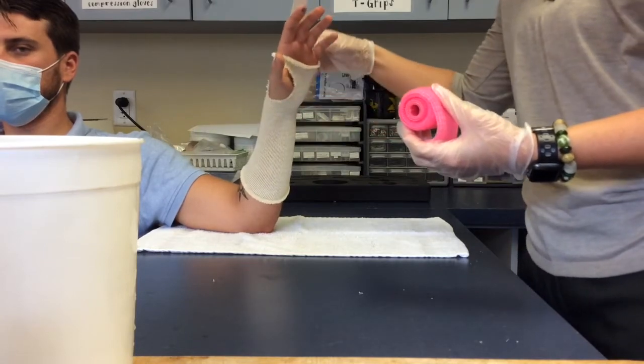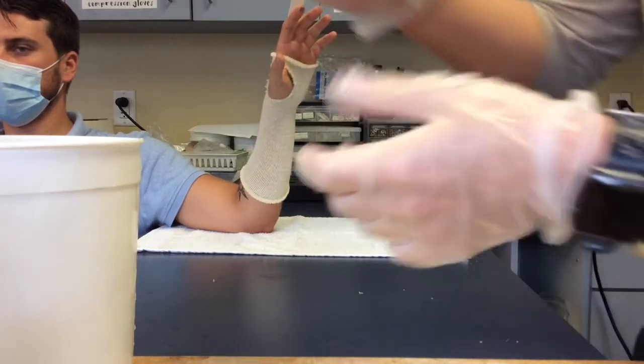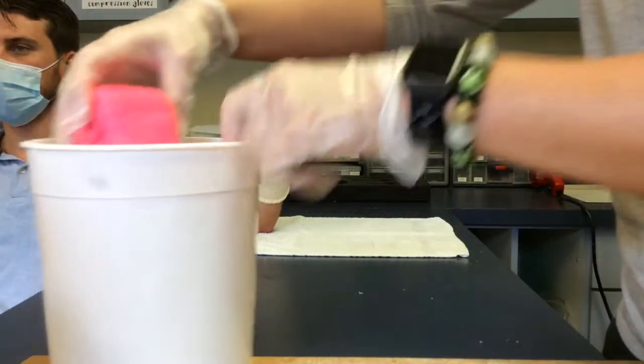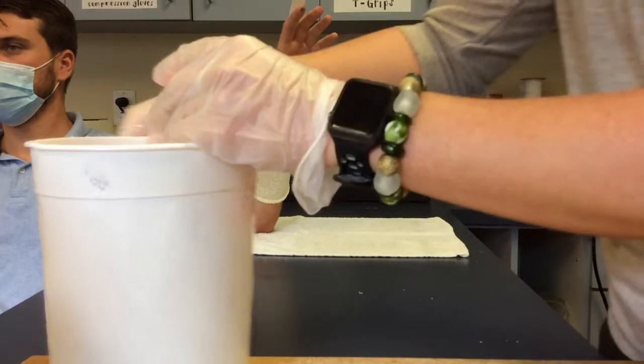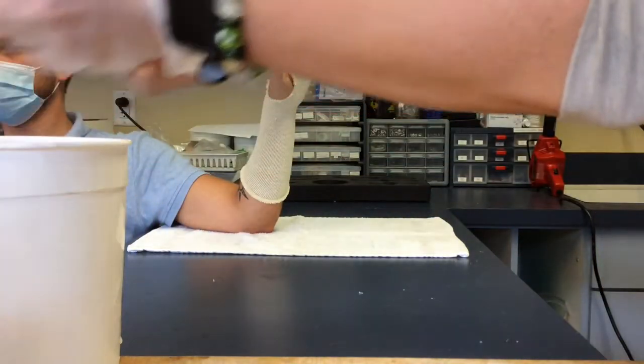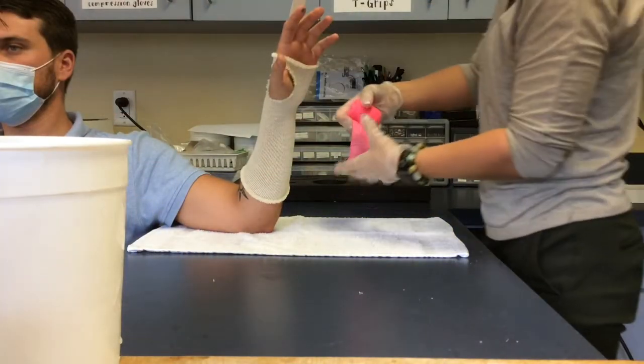Make sure your patient is in the proper position. Place the delta cast in the water, squeeze out a little bit of the water and start wrapping proximally to distally or you can go distally to proximally.